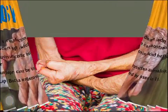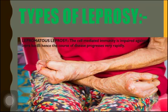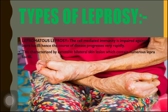Now we will talk about the types of leprosy. The first type is lepromatous leprosy. In this type, cell-mediated immunity is impaired against the lepra bacilli, hence the course of disease progresses very rapidly. It is characterized by extensive bilateral skin lesions which contain numerous leprosy bacilli.